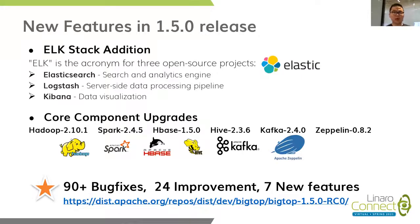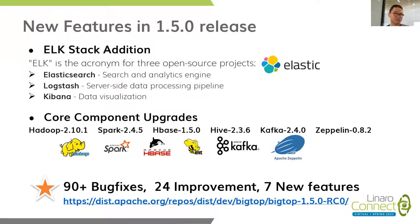We also added Elasticsearch, Logstash, and Kibana as the ELK stack to BigTop. Some core components were also upgraded, like Hadoop, Spark, HBase, Hive, Kafka, and Zeppelin. There are about 19 bug fixes, 24 improvements, and 5 new feature implementations in this new release. If you want to know more details, you can visit our official website.